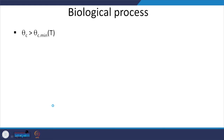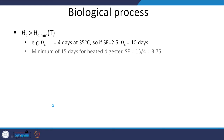For the biological process, theta C must be greater than theta C minimum at temperature. If theta C minimum is 4 days at 35°C, you typically apply a safety factor of 2.5, giving a theta C of 10 days — but the typical minimum for digesters is 15 days, especially for heated digesters. As you can see, the safety factor that people end up using is relatively high.